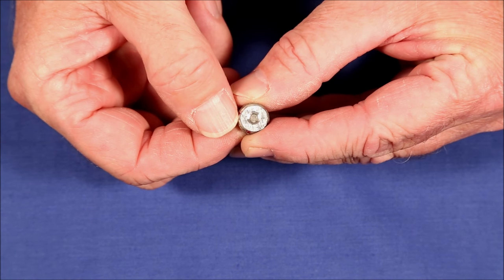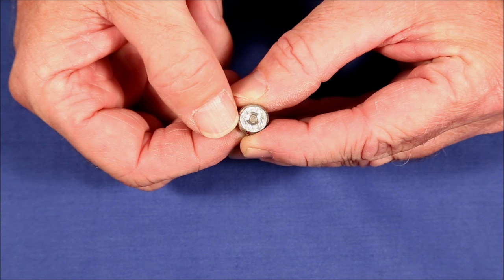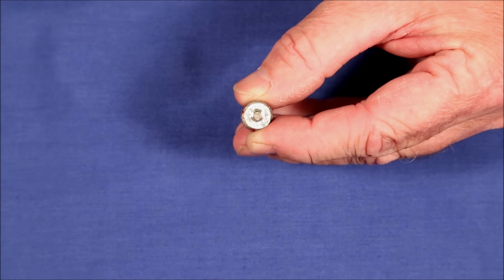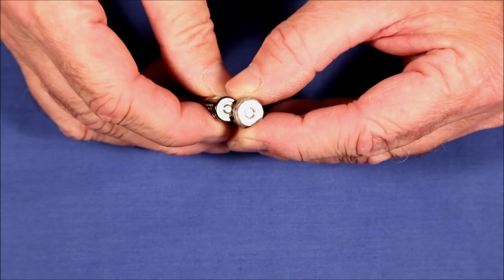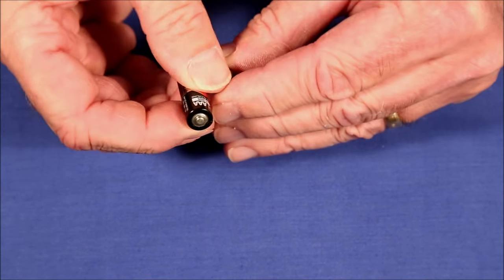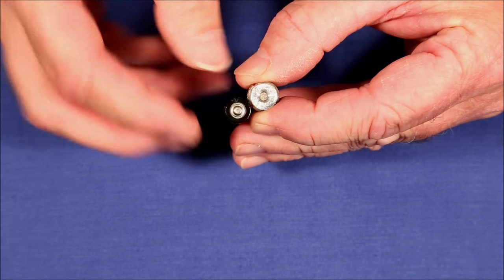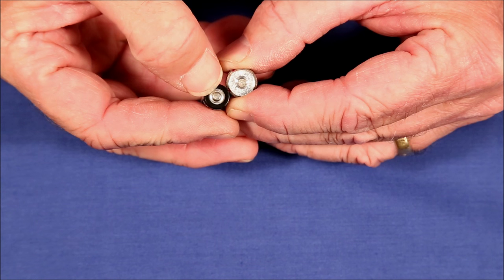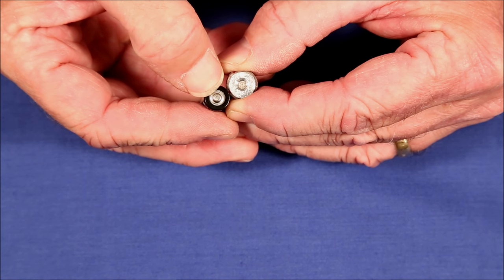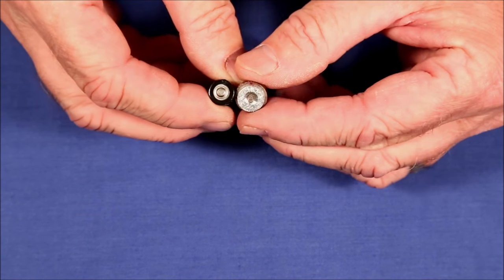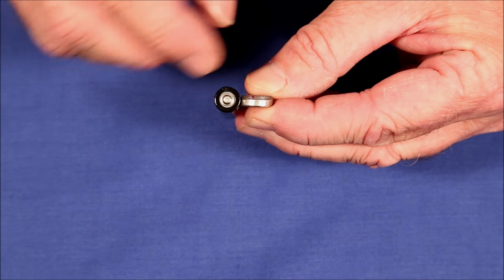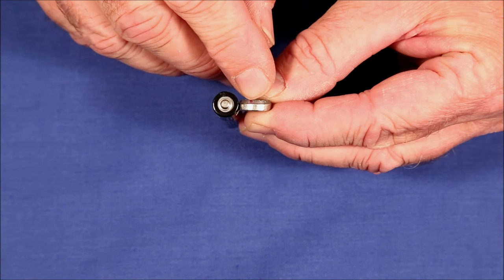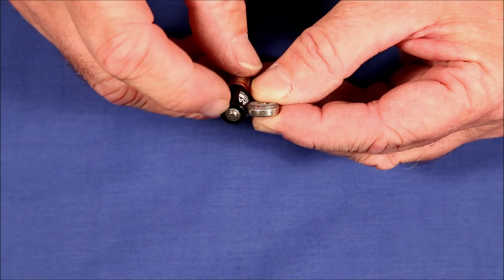An even better solution is to custom make a steel washer with a center hole sized to fit the button electrode of the battery. It needs to be countersunk slightly because there is a little ridge around the base of the button that needs some allowance. The washer should be about 38 thousandths thick which is the height of the button.